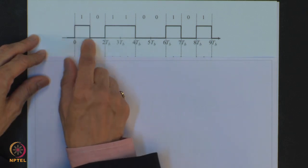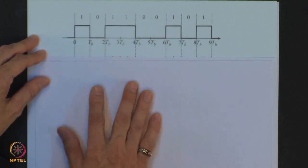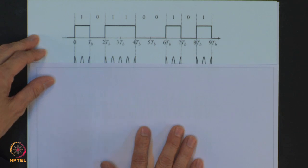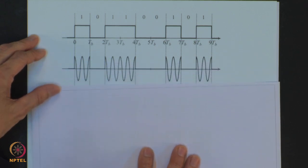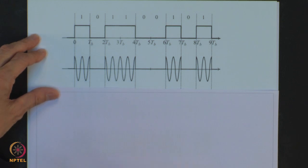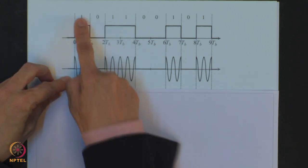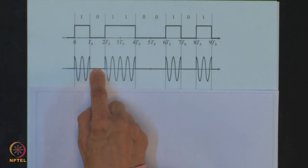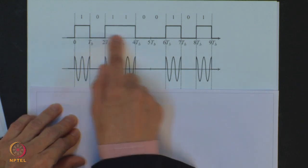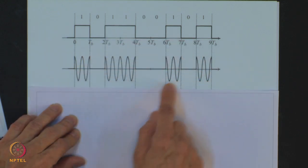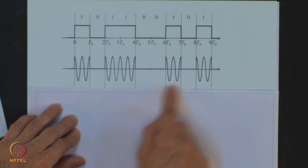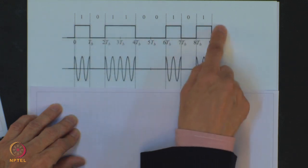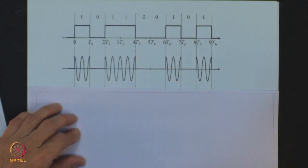For 1 we have a pulse and for 0 we do not have a pulse. This becomes your modulating signal M(T) and it modulates the carrier cos(2π·F_C·T). The output you will get is shown here. Whenever there is a 1 you transmit the carrier; whenever it is 0 you put it off. In binary amplitude shift keying, a sinusoidal carrier cos(2π·F_C·T) is gated on and off by the binary digit or bit sequence to be transmitted.